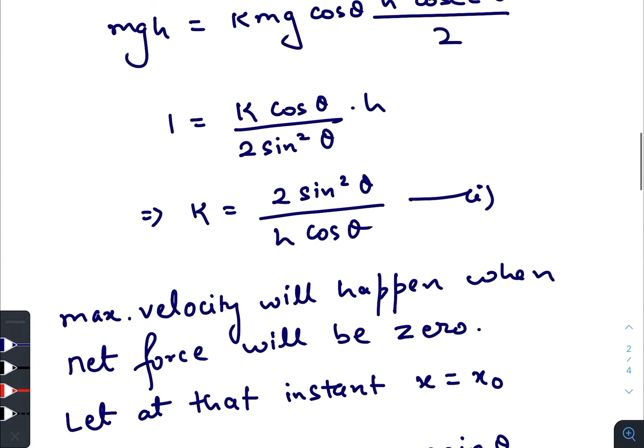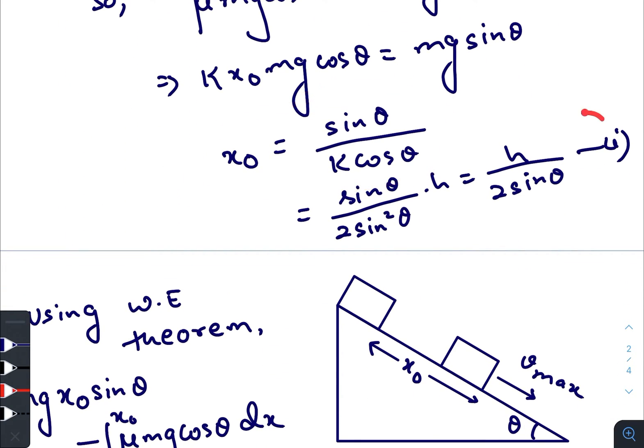Using the value of k from first equation we replace it and simplify the value of x₀ as h by 2 sin theta.